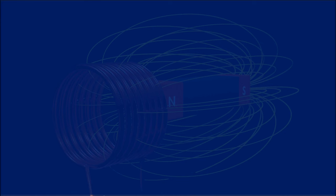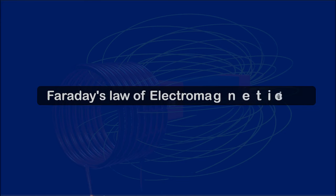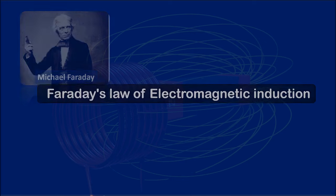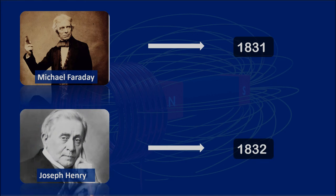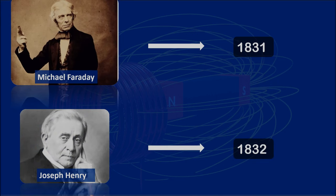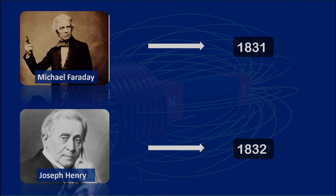In this video we will talk about Faraday's law of electromagnetic induction and their experiment. The phenomenon of electromagnetic induction was first discovered independently by Michael Faraday in 1831 and Joseph Henry in 1832. Faraday was the first to publish the result of his experiments. This world-known phenomenon is still charging and moving the world, without which we could not imagine our life.